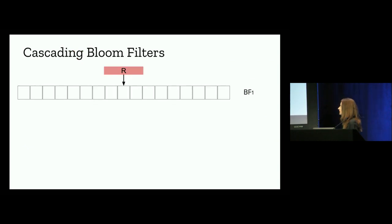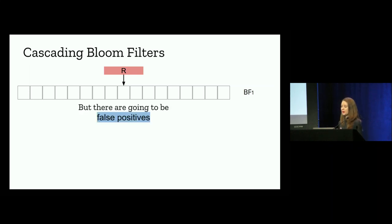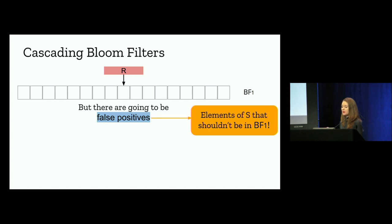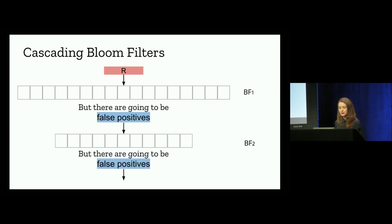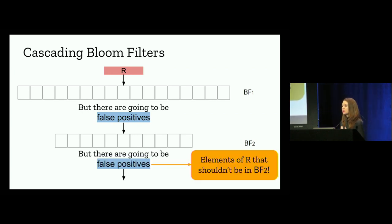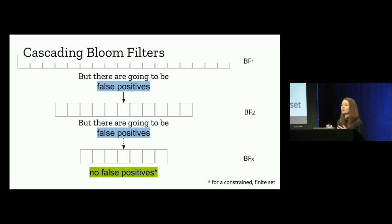We start with set R and put it into bloom filter 1. There will be false positives — elements of S that should not be in bloom filter 1. We find those false positives and put them into bloom filter 2. Again, there will be false positives — elements of R that shouldn't be in bloom filter 2. We find those false positives and put them in yet another bloom filter. We keep going until we can't find any more false positives and don't need another bloom filter.